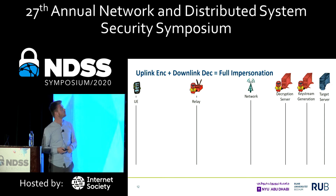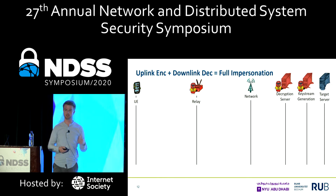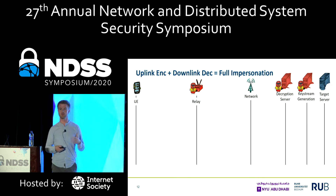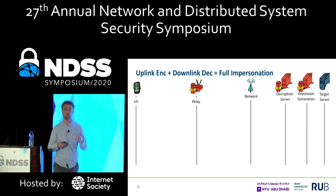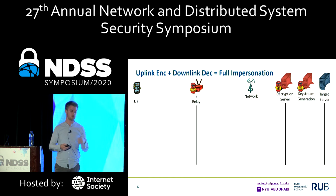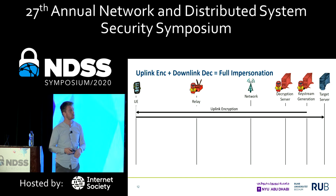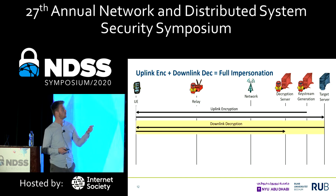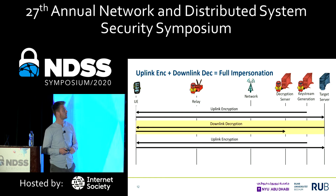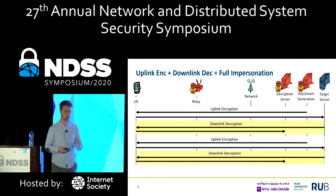We also built a downlink decryption oracle based on the reflection mechanism. To fully impersonate a victim on the IP layer, we can chain both oracles together to build a fully functional TCP connection. We start with the uplink encryption to send a TCP SYN packet towards the targeted server, and in subsequent steps alternate between the downlink decryption and uplink encryption, and so on.